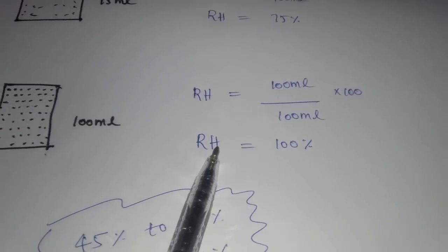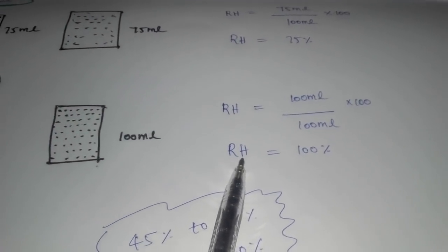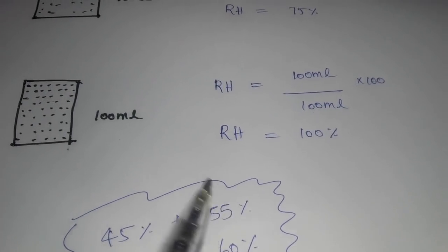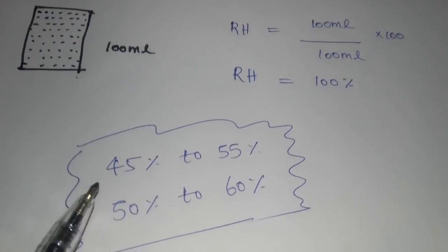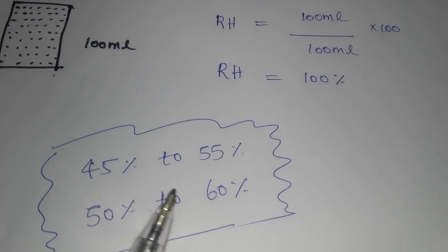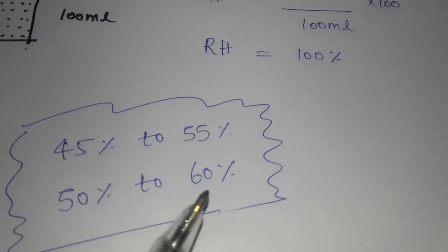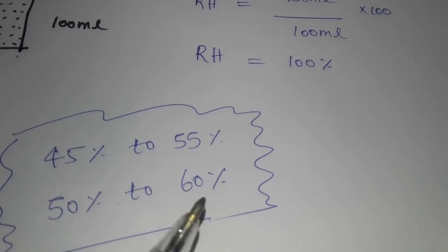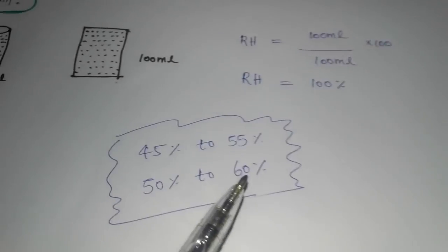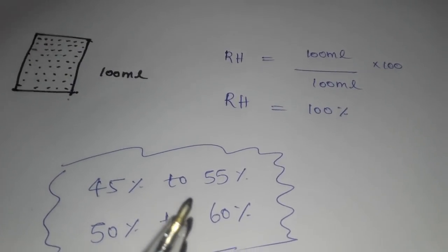Without the room, we can absorb all the content of the air. The ratio is relative humidity. The relative humidity is 45 to 55%, or 52 to 60%. The amount of humidity is in a 45 to 55%. So this is relative humidity.